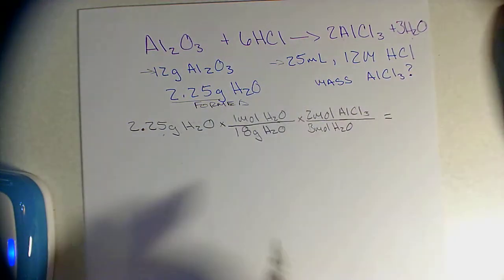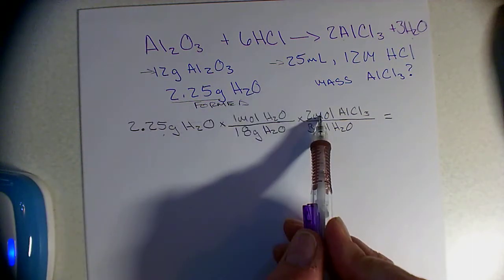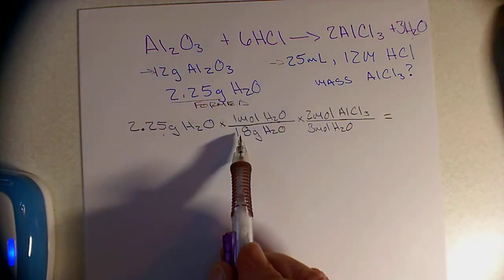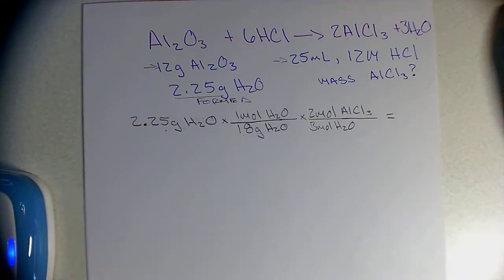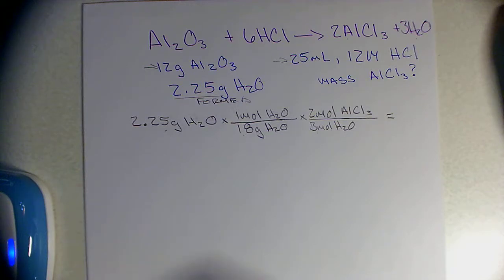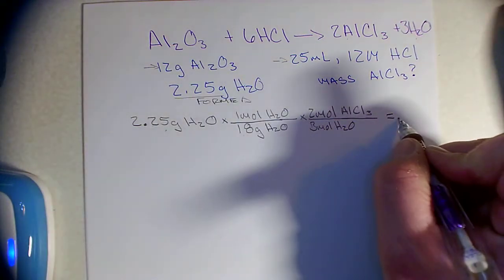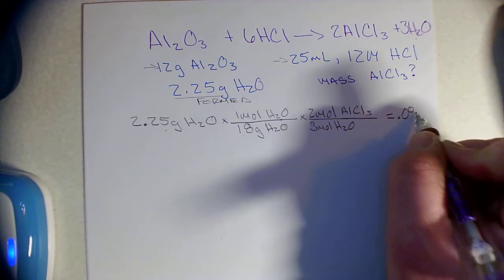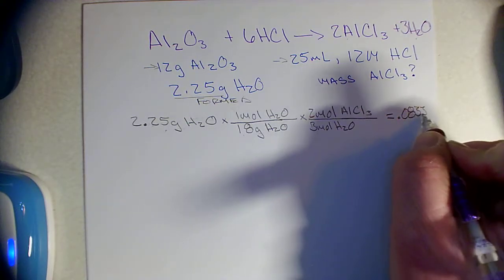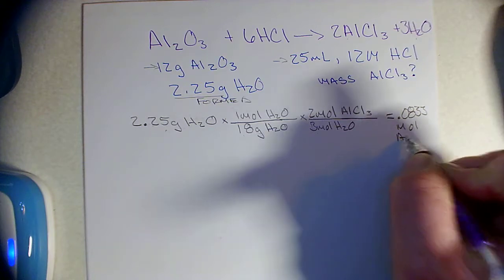Now when I put this in my calculator, I'm going to go 2.25 times 2 divided by, in parentheses, 18 times 3. That's to make sure I'm actually getting all the parts. Remember, multiplication is distributive, so it doesn't matter that I lump everything together and divide by 18 times 3. And I get 0.0833 moles of AlCl₃.